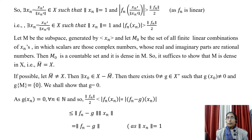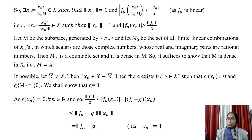Let M₀ be the set of all finite linear combinations of xₙ where the scalars are complex numbers whose real and imaginary parts are both rational. Since the rational numbers are countable, M₀ is also countable. Since the rational numbers are dense in ℝ, M₀ is dense in M. So to show that X is separable, it is sufficient to show that M is dense in X, that is, the closure of M equals X.